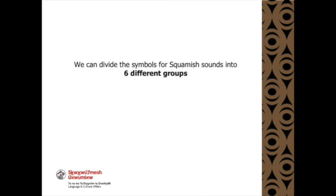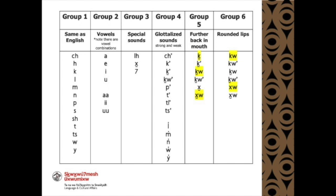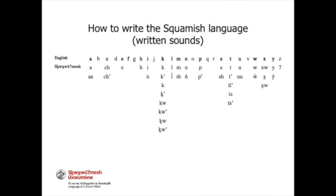We can divide the symbols for Squamish sounds into six different groups. Group one is the same as English. Group two and three are the vowels. Group four are the Mauri's sounds. Group five are the sounds further back in the mouth. And group six are the rounded lip sounds.